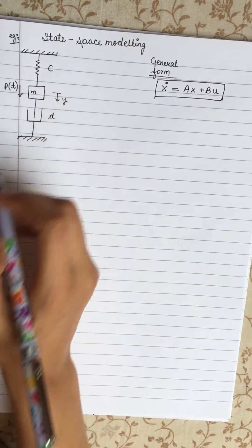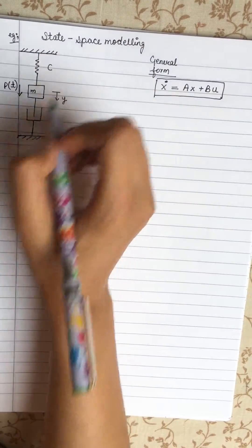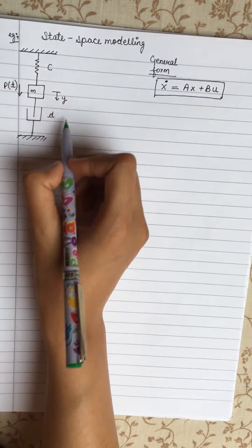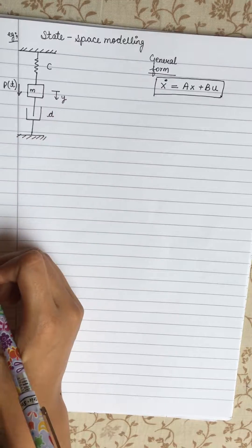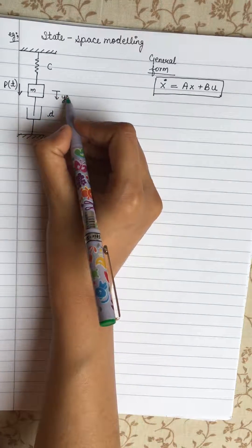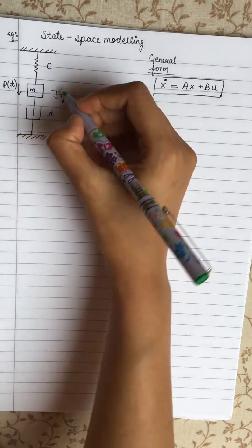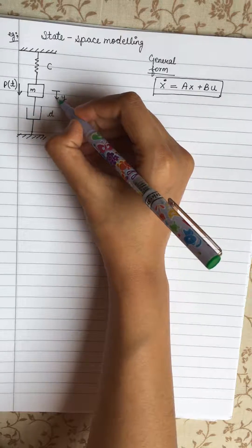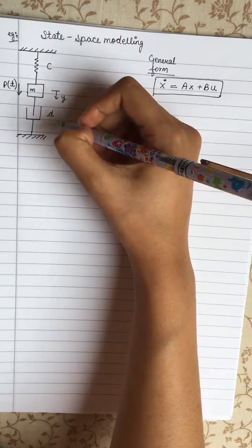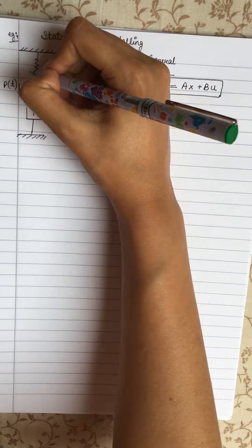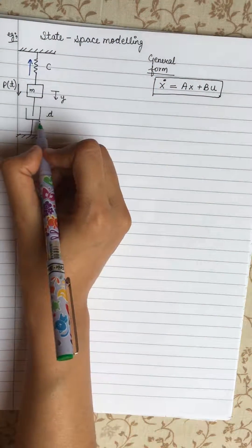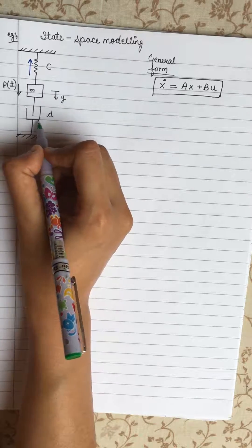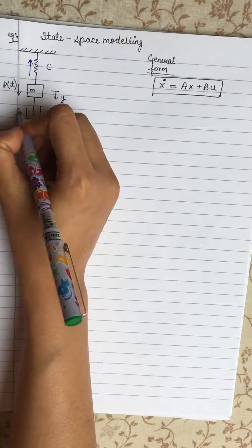In this video, we will learn one more example for state space modeling. Let's just say this is a model given. Then how to generate an equation from this model. Look at this Y. This one is changing the distance towards down. So the spring will act opposite to that. The spring force will act opposite. And this is called a dampener. This force will also act opposite.